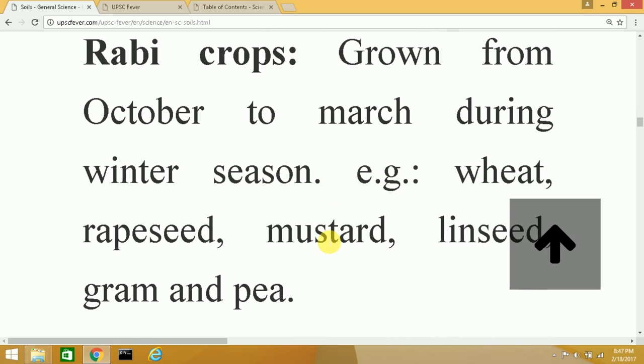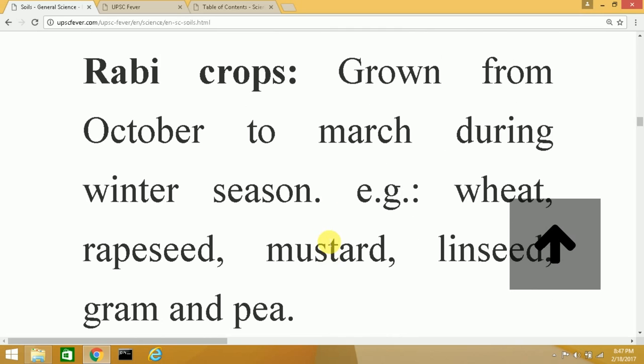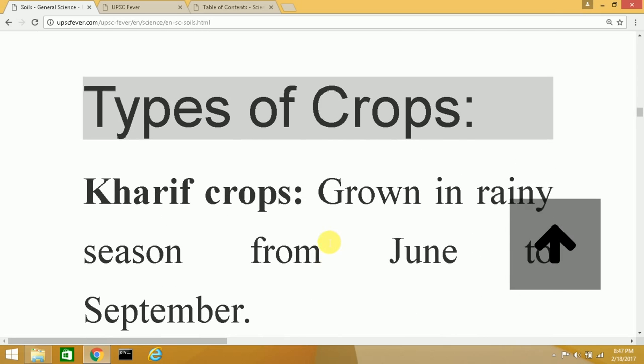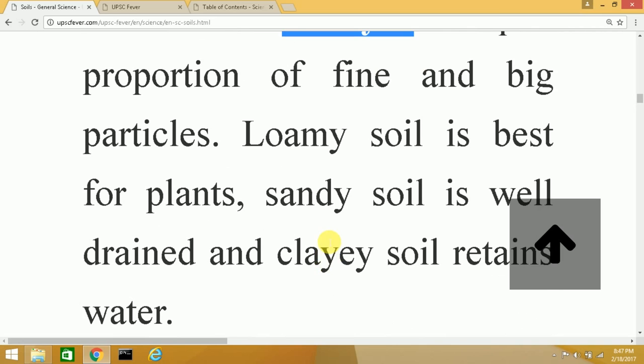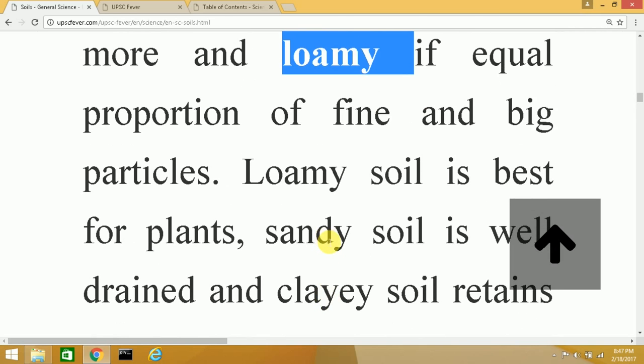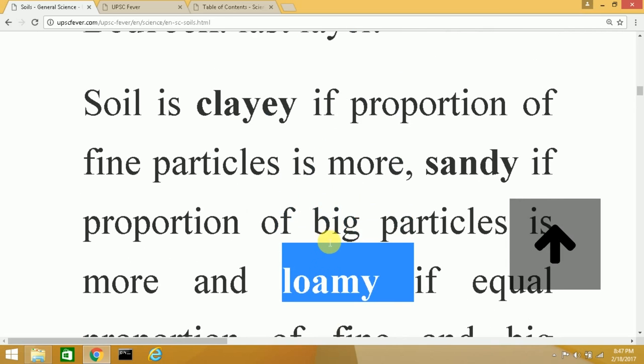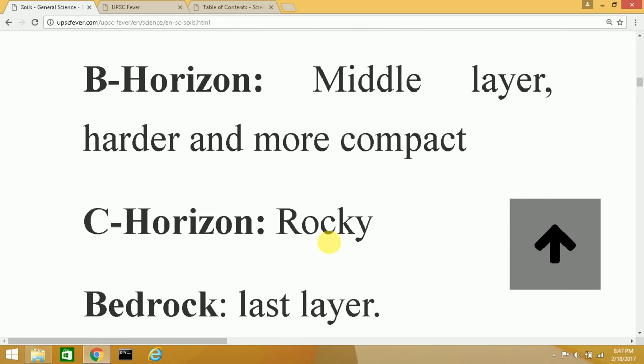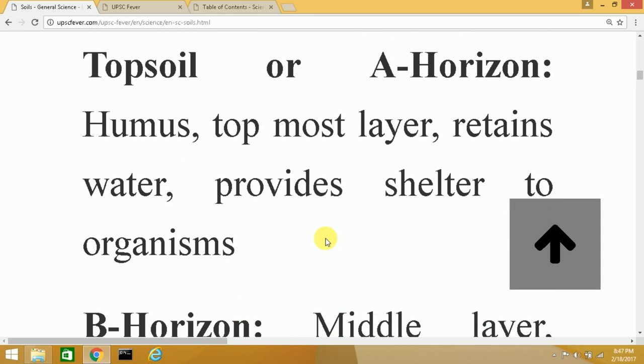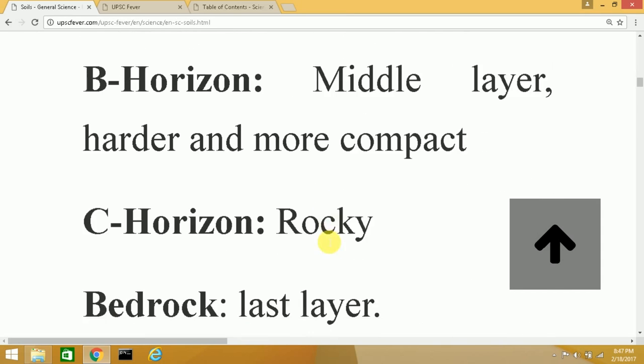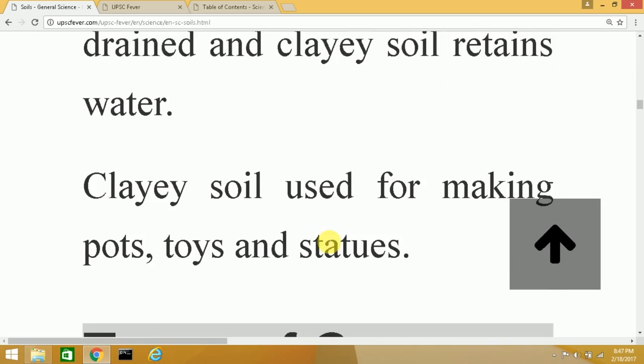So that ends our chapter on soil. The important keywords you can note are: What are Rabi crops? What are Kharif crops? What is the use of clayey soil? What are the types of soil? One is loamy, one is sandy, one is clayey. And the four layers of soil: namely the A-horizon or topsoil, then the B-horizon, then the C-horizon, and the bedrock finally.